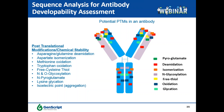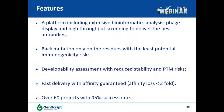During the lead optimization process, these risks will be assessed and actions taken if experimentally validated as real risks. To summarize our humanization platform, it includes extensive bioinformatics analysis, phage display, and high-throughput FASEBA screening to deliver the best antibody leads. Mutations will only be performed on residues with the least potential immunogenicity risk. Developability assessment will be performed to reduce liability and post-translational modification risks. We have extensive experience delivering over 60 projects with a 95% success rate.